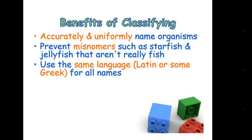Other benefits are that we can accurately name organisms and there will be no misunderstanding. For example, by hearing the names starfish and jellyfish, we won't assume they are fish — they actually belong to another phylum, Echinodermata. We use Latin, or in some cases Greek, for giving scientific names. These are the benefits of classification. That's all for today. Thank you.